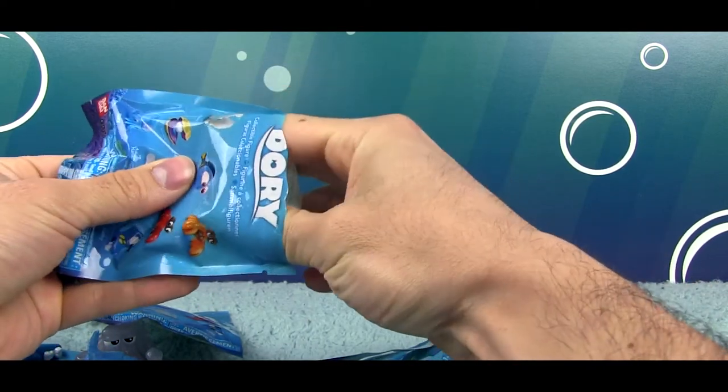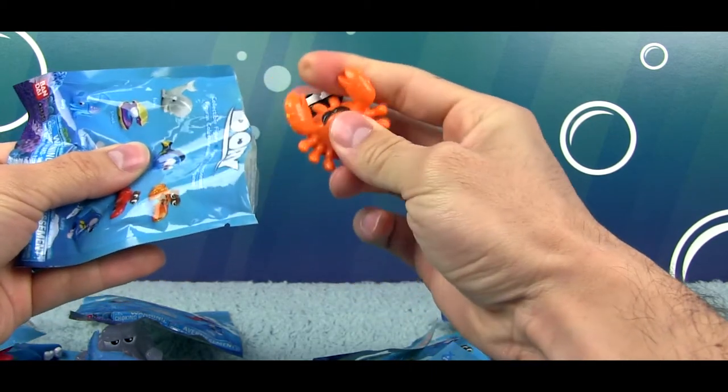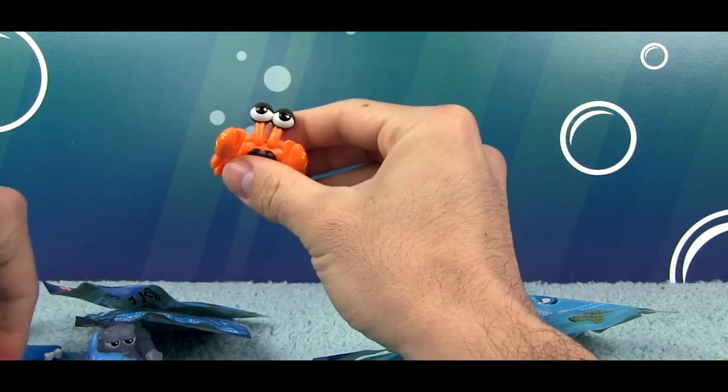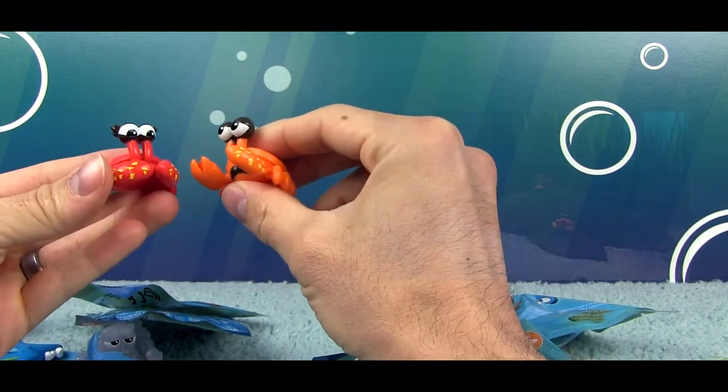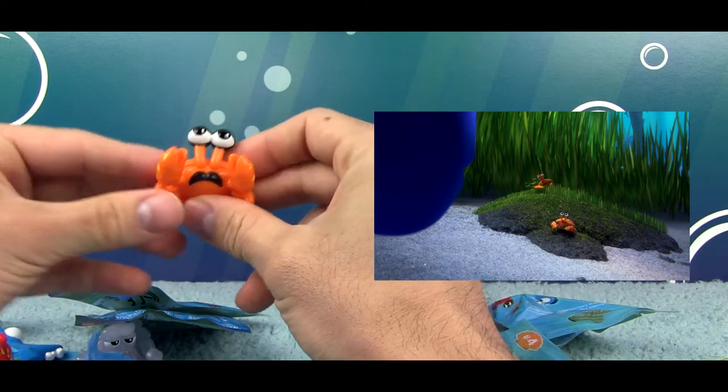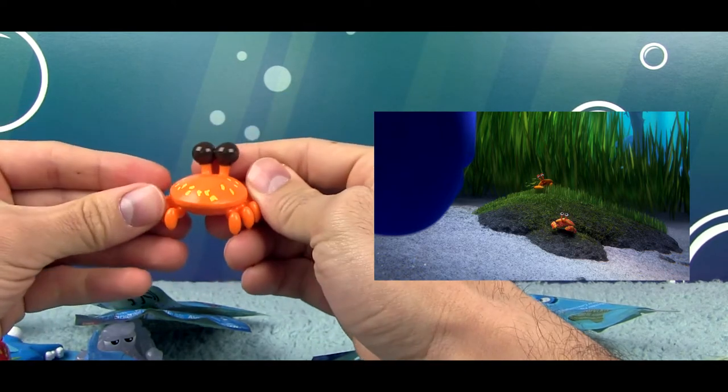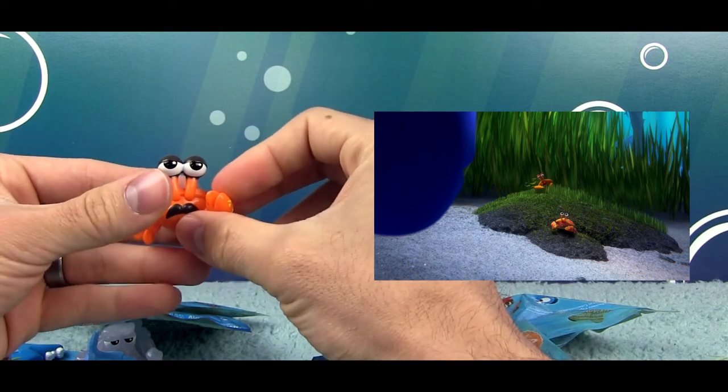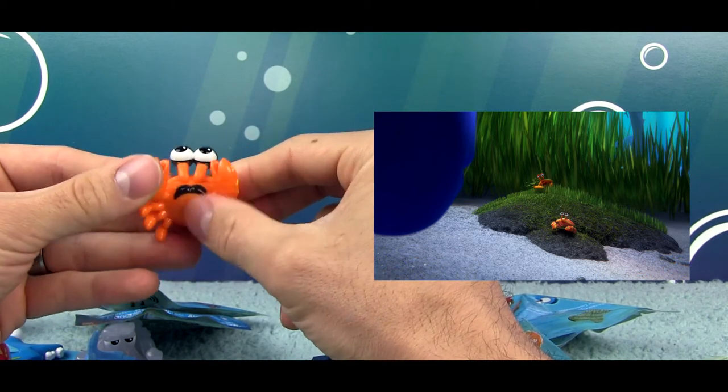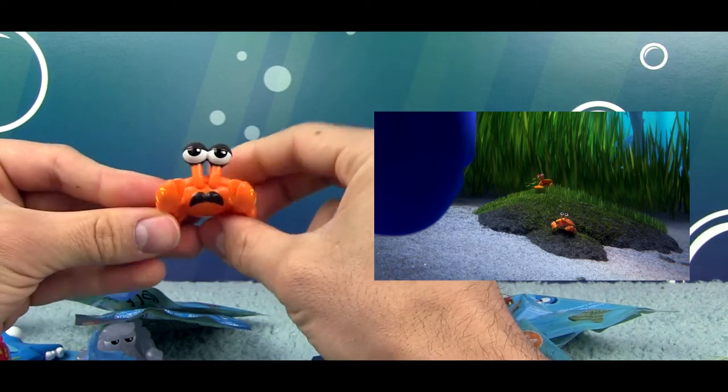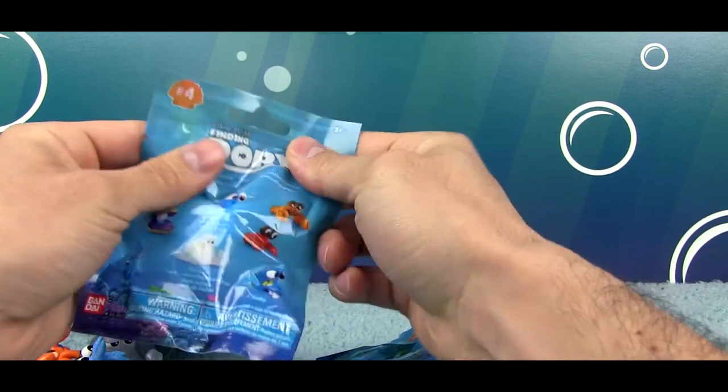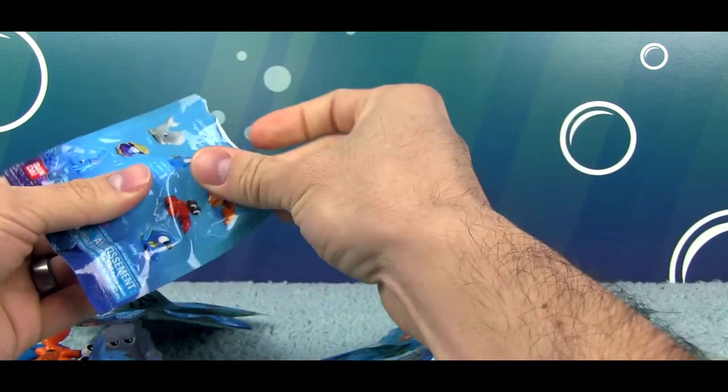Our next Finding Dory mystery blind pack character is nice. So this is Bill. Bill here was along with Carol when they were both telling Dory to swim through the pipes in the open ocean exhibit. Here's a fun fact: Bill is voiced by none other than John Ratzenberger. He appears of course in every single Pixar movie with a voice cameo and Bill was his cameo in Finding Dory. So it's awesome to have him represented as a toy.